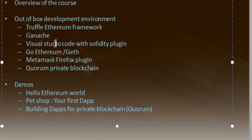The third thing the environment provides is Visual Studio Code, which is the IDE — Integrated Development Environment — for development and reviewing demos. You also get the Solidity plugin with it. Ethereum development happens in a language called Solidity, which is the programming language for Ethereum. Visual Studio Code comes with the Solidity plugin installed so that it understands Solidity-related files. The next thing is the Go implementation of Ethereum, also called Geth, which is installed for you.